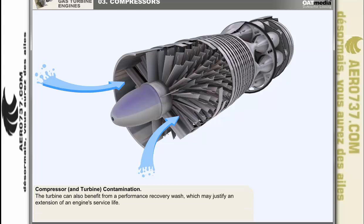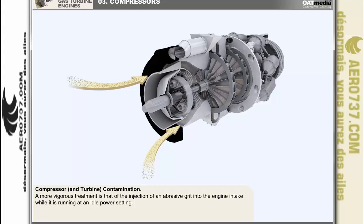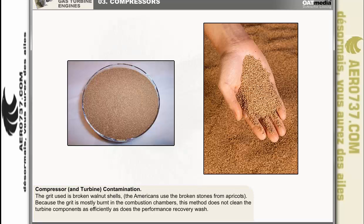The turbine can also benefit from a performance recovery wash, and frequent applications of the emulsion cleaner may justify an extension of service life for some engines. A more vigorous treatment — more applicable to centrifugal compressor engines — is the injection of an abrasive grit into the engine intake while running at idle power. The grit takes the form of broken walnut shells, or in the American practice, broken stones from apricots. Unfortunately, because the grit is mostly burnt in the combustion chambers, this method does not clean the turbine components as efficiently as the performance recovery wash.